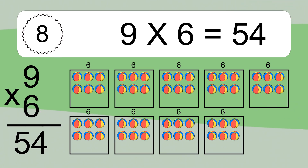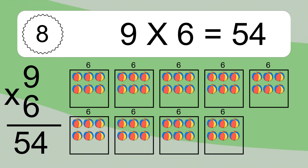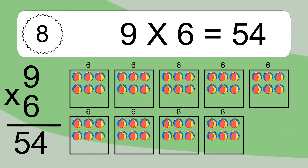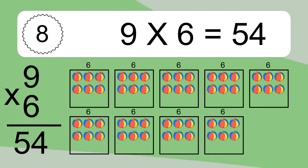We have 9 boxes, and each box has 6 colorful balls inside. If you count all the balls in all the boxes together, you will have 9 times 6 balls. This equals 54 balls.